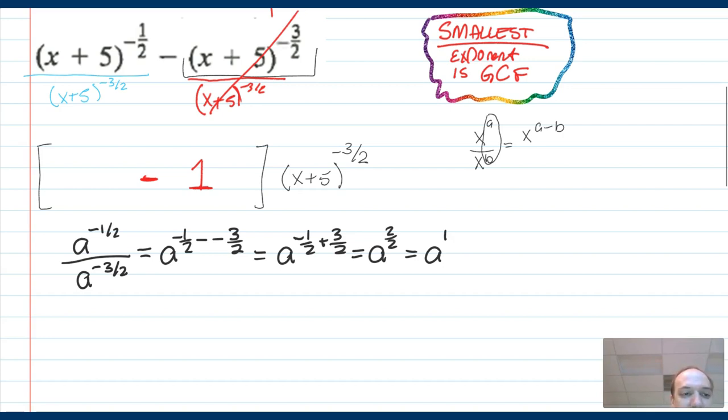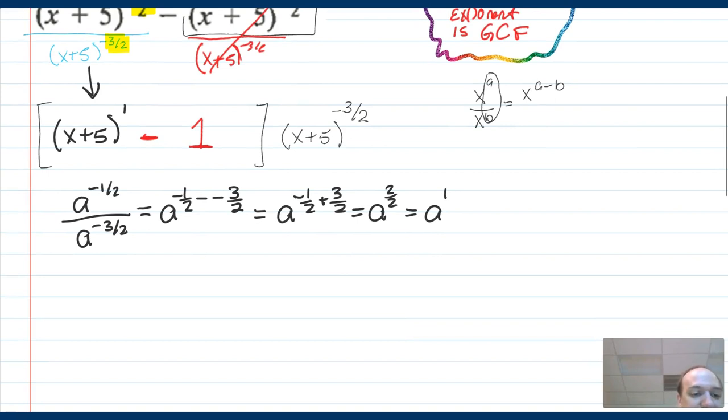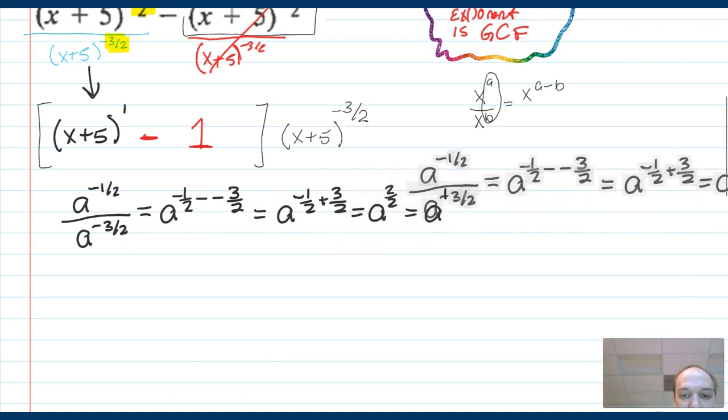That's going to be the same as a to the minus one half plus three halves, which is like three halves minus one half or a to the two halves, which is just a to the first. I didn't have a, I had x plus five, but everything here remains the same, which means when I go down and fill in this box, that's going to be x plus five. And this is a really cool result because x plus five to the first is just x plus five.